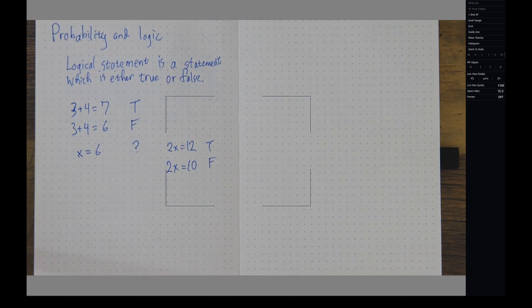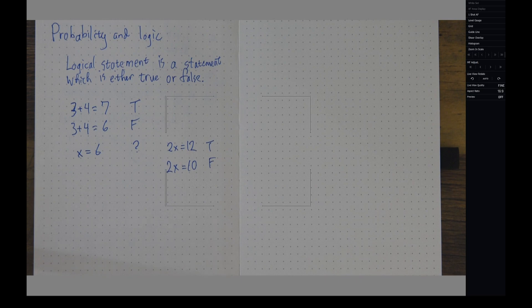So when I'm dealing with variables, the truth of a statement is going to depend on what value I actually assign to the variable.